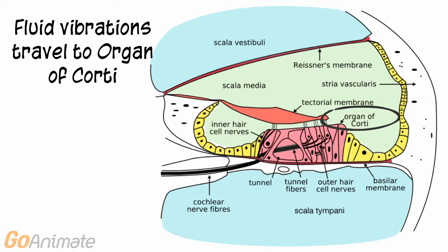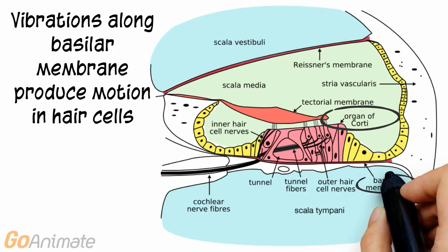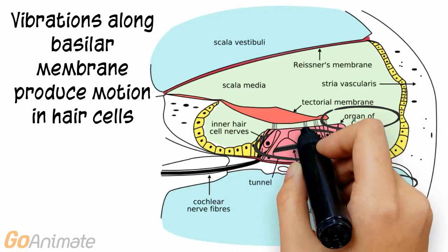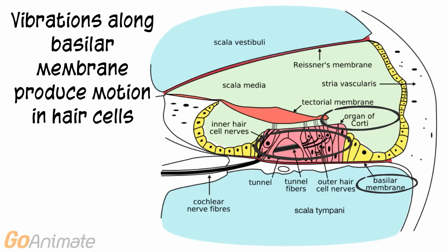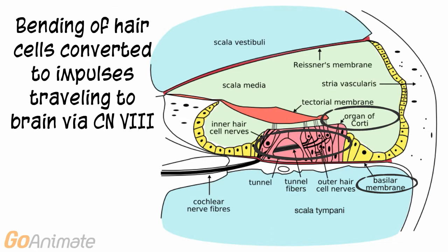The middle chamber, or scala media, contains the organ of hearing called the organ of Corti. The organ of Corti consists of two membranes connected by hair cells. The fluid vibrations are transmitted along the basilar membrane and picked up by the hair cells. The hair cells respond by sending impulses which travel to the brain via cranial nerve 8.